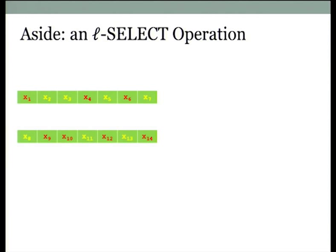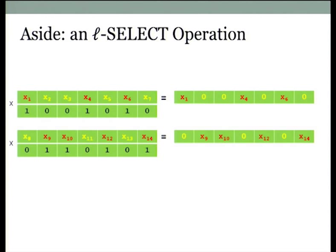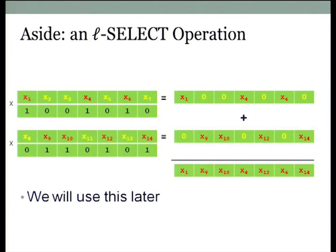One very useful operation you can do with pointwise addition and multiplication is an L-select operation. Suppose I have two ciphertexts and I want to mix and match the plaintext in them — get another ciphertext that only has the red data in it. I multiply by a vector of ones and zeros to get a vector of only the red ciphertext and zero elsewhere. Then when I add it, I get my vector of mixed-and-matched data between the two. This is a very useful operation I'll use a lot later.